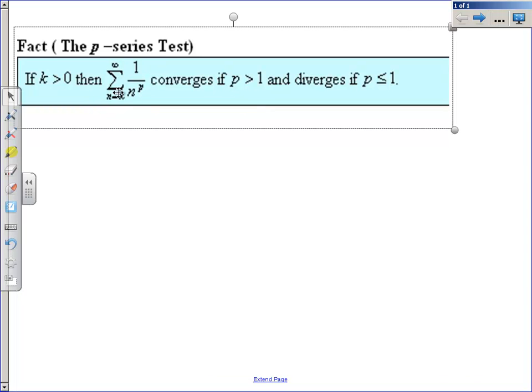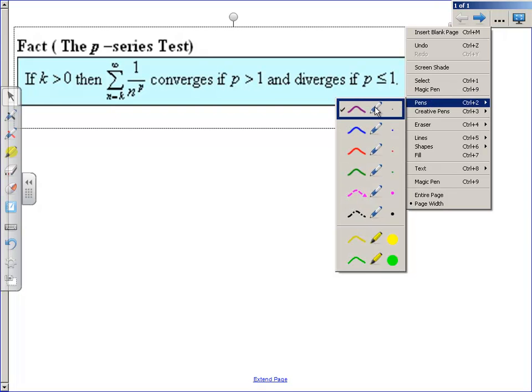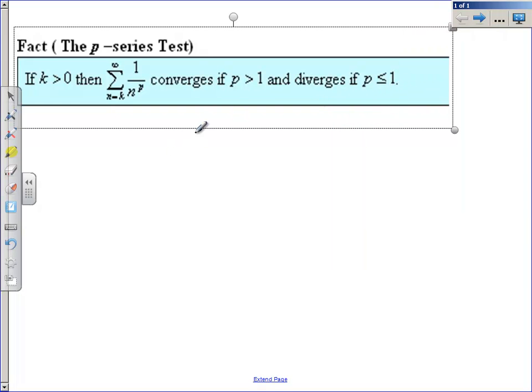As long as you have a series going from 1 to infinity, 2 to infinity, 4 to infinity, and if your fraction is 1 over n to a power of P, this is going to converge if that power is bigger than 1, and it's going to diverge if that power is less than or equal to 1.